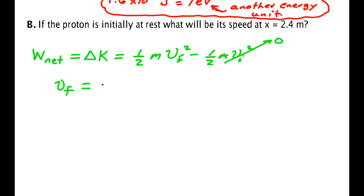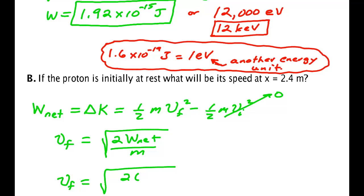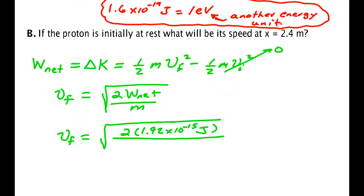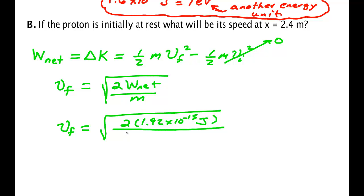So the final speed is the square root of 2 times the net work done on the particle divided by the mass. Now in our case the work was done by the electric force. So the speed is the square root of 2 times, we go back up here and get my energy unit, 1.92 times 10 to the minus 15 joules. And then I need to divide by the mass of the proton. Now that's a constant that's given in UIL and AP exams or it's in the back of your book. And I happened to look mine up and I found that it's 1.67 by 10 to the minus 27 kilograms. And I punched that in and I get 1.52 times 10 to the 6 meters per second.